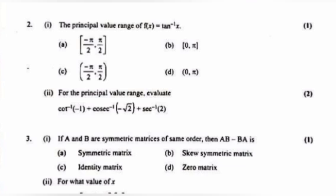If A and B are symmetric matrices of the same order, then AB − BA is: A) symmetric matrix, B) skew symmetric matrix, C) identity matrix, D) zero matrix. Answer: B, skew symmetric matrix.